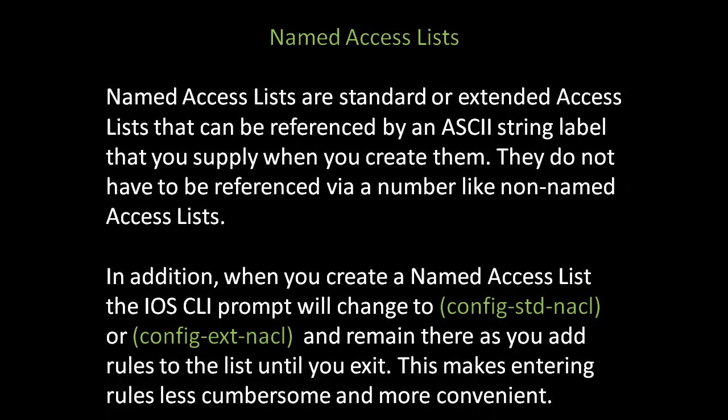Now let's look at named access lists. Named access lists are standard or extended access lists that can be referenced by an ASCII string label that you supply when you create them. They do not have to be referenced via a number like non-named access lists. In addition, when you create a named access list, the IOS prompt will change to config-standard-nacl or config-ext-nacl, depending on whether it's a standard or an extended list, and remain there as you add rules to the list until you exit. This makes entering rules less cumbersome and much more convenient.